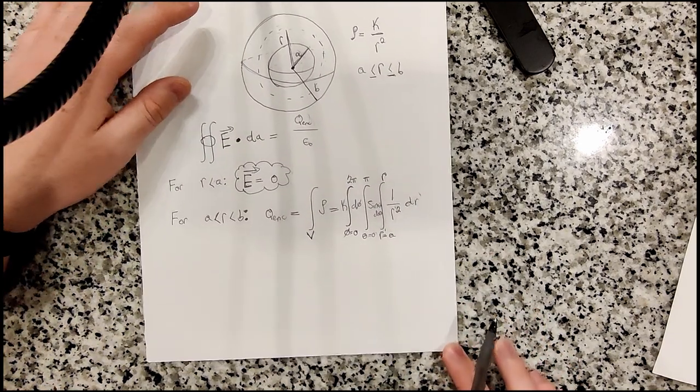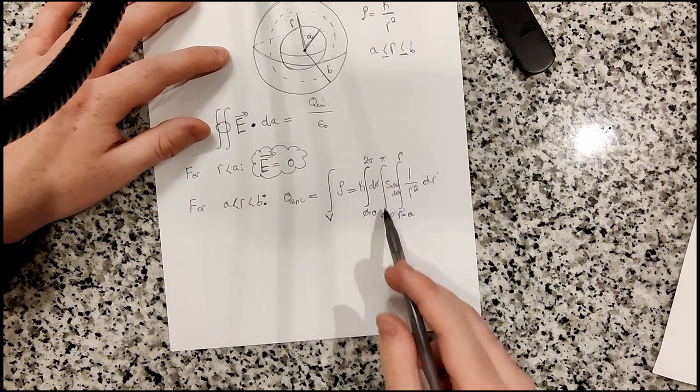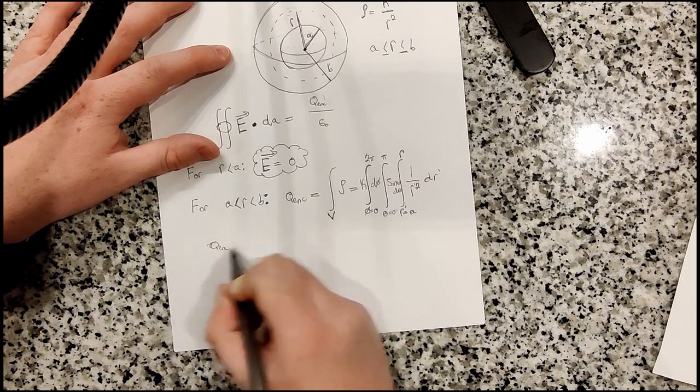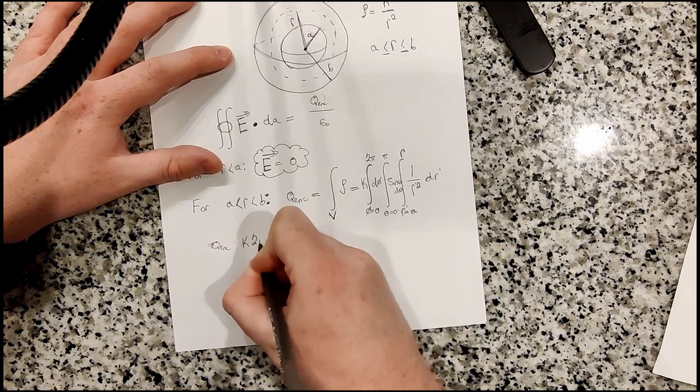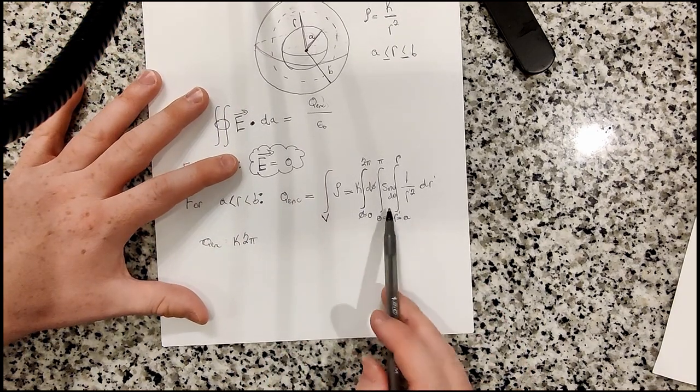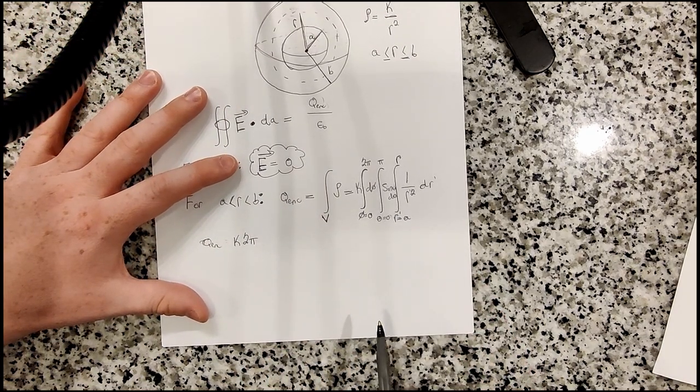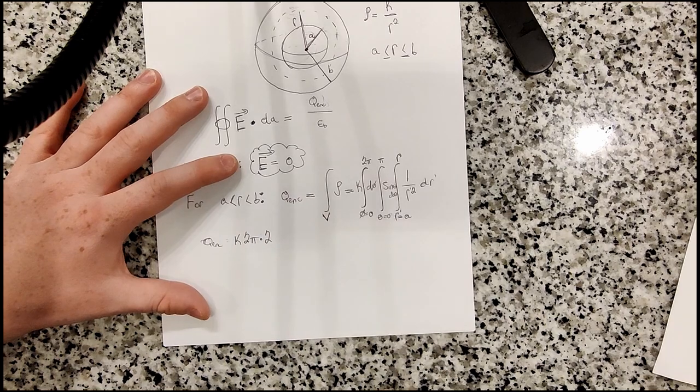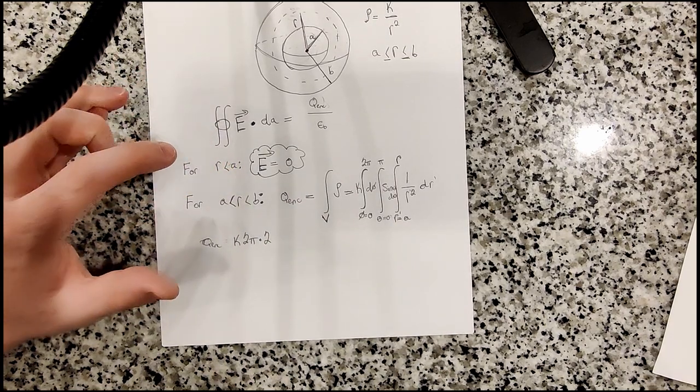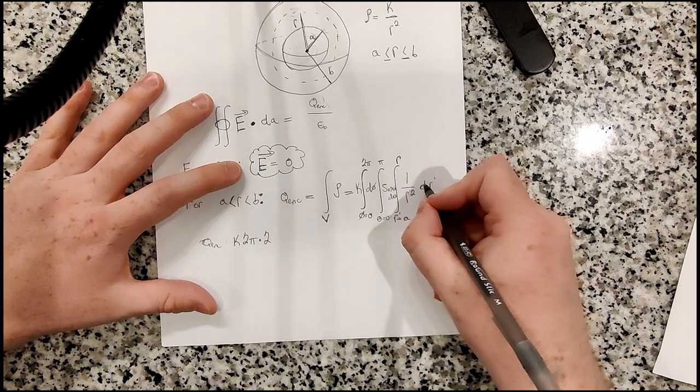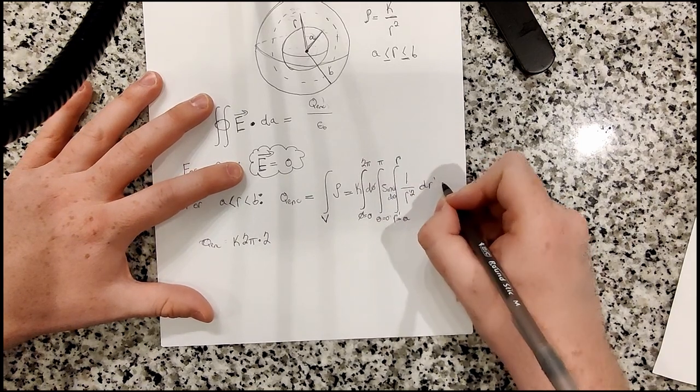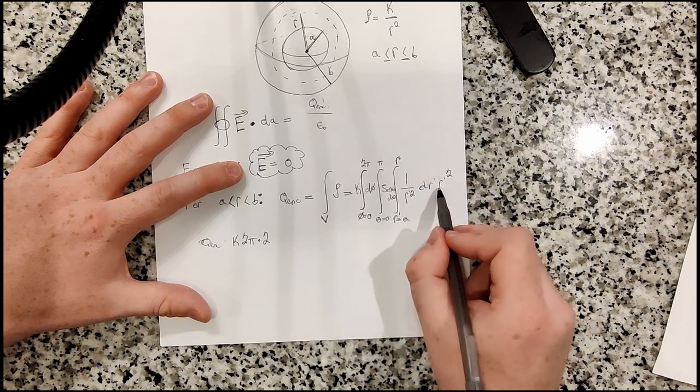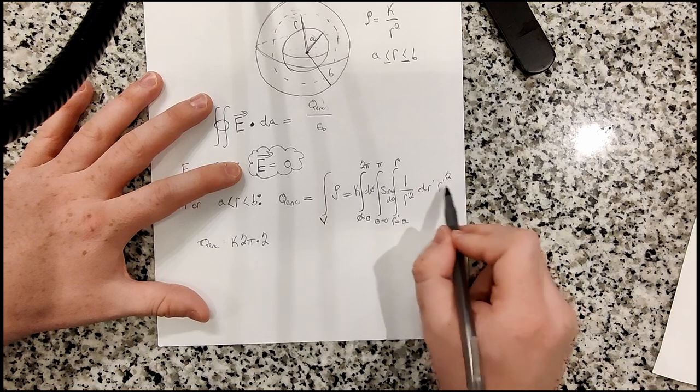So yeah, we're moving right along. So let's just go ahead and do this. So we have the 2 pi. So we have the charge enclosed. The 2 pi, k 2 pi from this integral. Sine of theta d theta from 0 to pi is just going to be 2. That's times another 2. And then we have, oh, I forgot here.